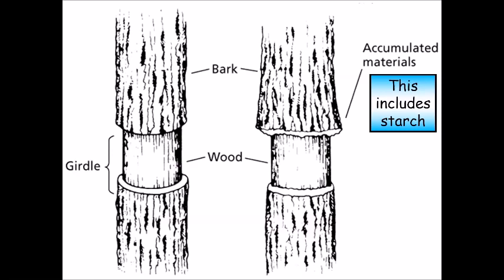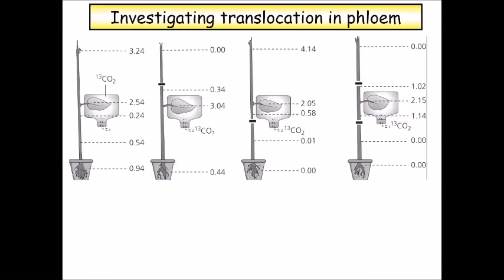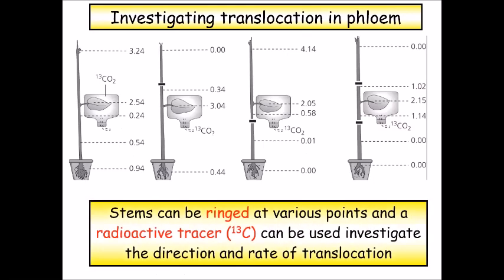So what the plant's doing is trying to move it to the roots but because the phloem has been cut it's converting it to starch where it can get it to, which happens to be just above that cut. Other things that have been used to try and prove the mass flow theory is the use of radioactive labeling of carbon. So they radioactively labeled carbon dioxide and then they exposed the plant to it and they could trace it using autoradiographs.